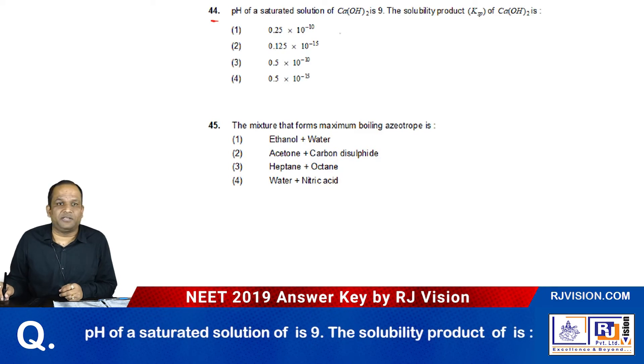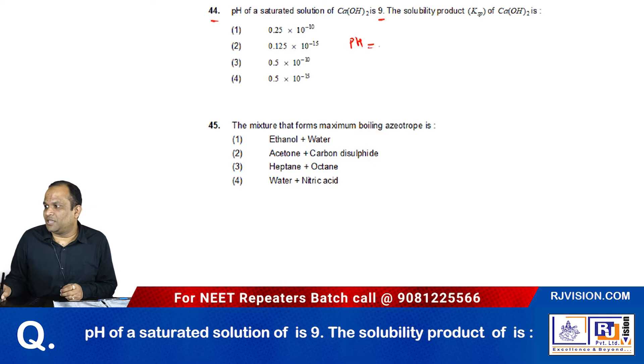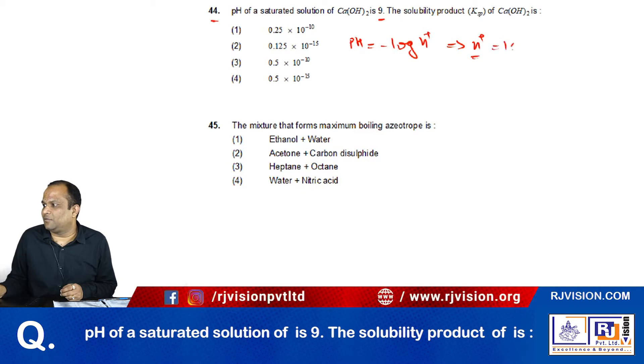Question number 44 is from ionic equilibrium. The pH of the solution is given as 9. pH equals minus log of H plus ion, and therefore H plus ion equals 10 raise to the power minus 9.